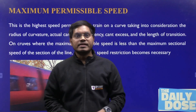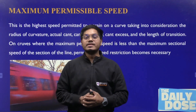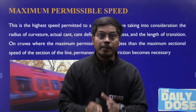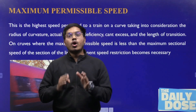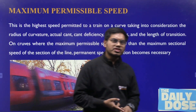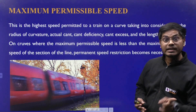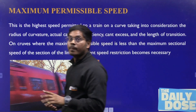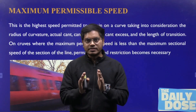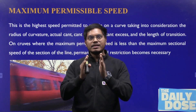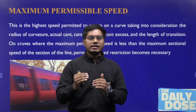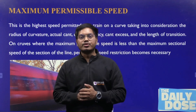Secondly, there is something called maximum permissible speed. Maximum permissible speed is the highest speed permitted to a train on a curve, taking into consideration the radius of curvature, actual cant, cant deficiency, cant excess, and the length of the transition curve. It is clear that the maximum speed is going to be greater than the equilibrium speed.